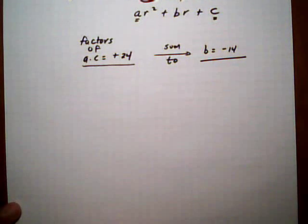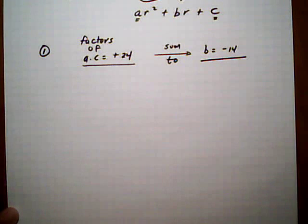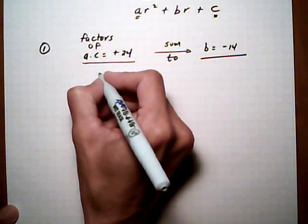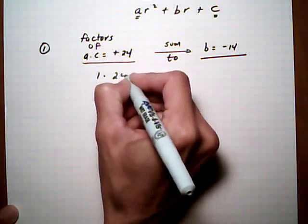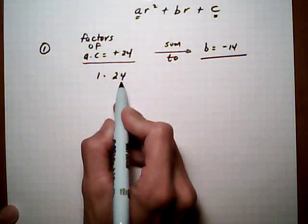Let's start listing out factors of 24. This is going to be our first step with the factor by grouping method. What I usually do to not miss any possibilities is start with 1 times the number 24 or whatever you have there, and look at the sign.